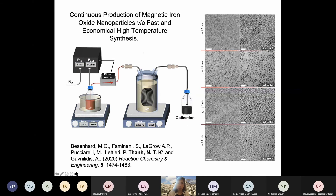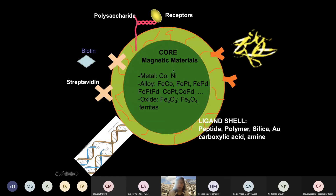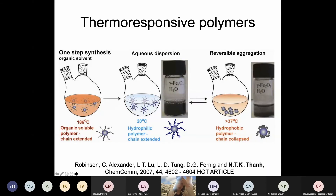We also need to look at the stability of the nanoparticle - the shell is important. You can have different biological molecules like peptides, or use a polymer, or use inorganic materials such as silica or gold, and they have different functional groups like carboxylic or amine. So you will have different kinds of interactions later on - antibody-antigen interaction, DNA-DNA interaction, biotin-streptavidin interaction. You need to have a system designed for the intended application.